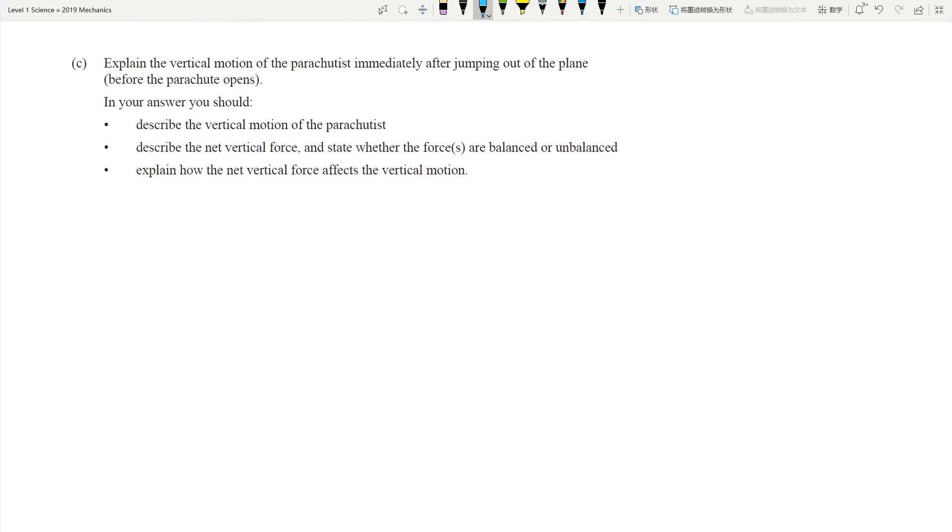Question C. This is a really interesting question. Explain the vertical motion of the parachutist immediately after jumping out, before the parachute opens. Describe the vertical motion and describe the net force and state the force as either balanced or unbalanced. Show how the net vertical force affects the vertical motion.